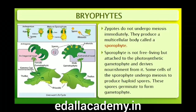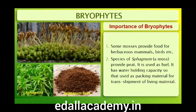Zygotes do not undergo reduction division immediately. They produce a multicellular body called a sporophyte. The sporophyte is not free-living but attached to the photosynthetic gametophyte and derives nourishment from it. Some cells of the sporophyte undergo reduction division (meiosis) to produce haploid spores. These spores germinate to produce gametophytes.